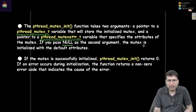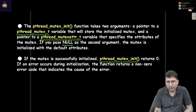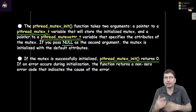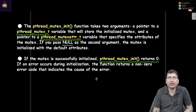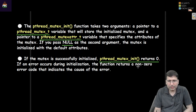When the second argument is null, the mutex is initialized with the default attributes. If the mutex is successfully initialized, pthread_mutex_init will return zero. We can check for any error when initializing the mutex — we check for zero meaning success. In case there is an error, a non-zero value will be returned.